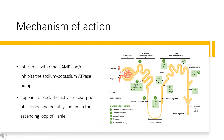Mechanism of Action. Bumetanide interferes with renal cAMP and/or inhibits the sodium-potassium ATPase pump. Bumetanide appears to block the active reabsorption of chloride and possibly sodium in the ascending loop of Henle, altering electrolyte transfer in the proximal tubule. This results in excretion of sodium, chloride, and water, and hence diuresis.